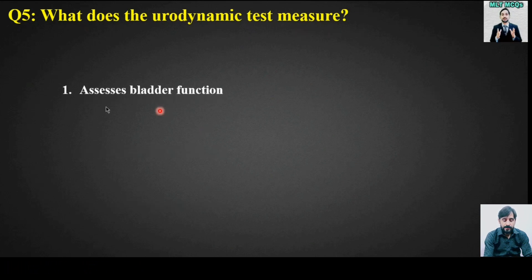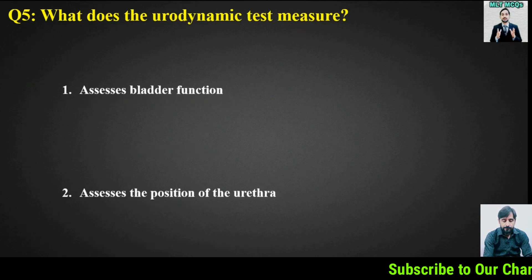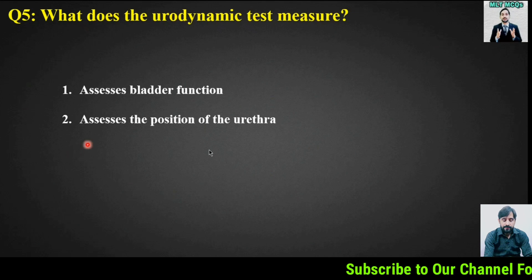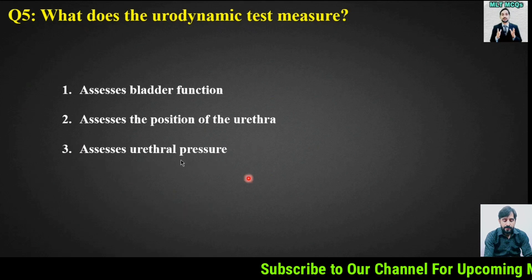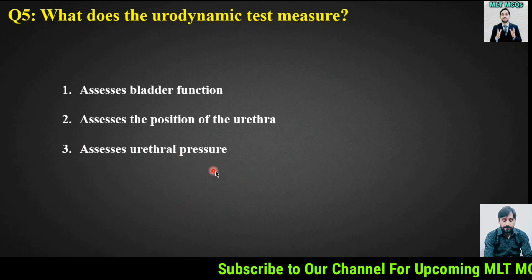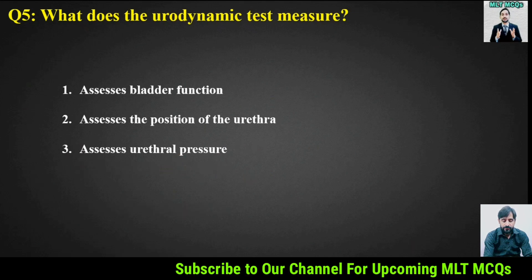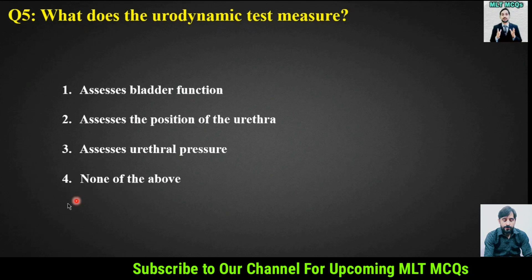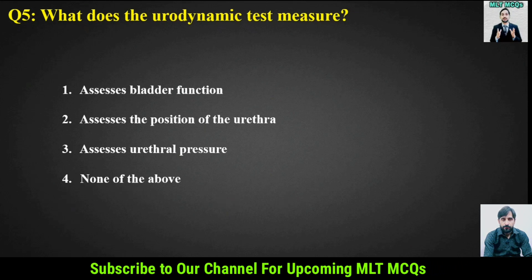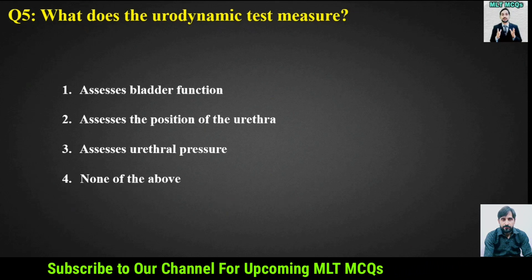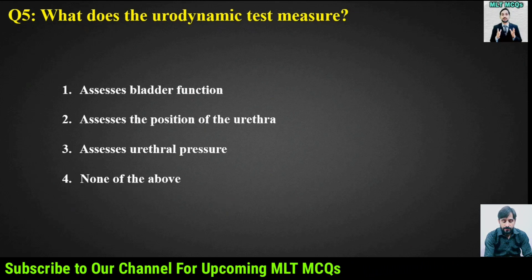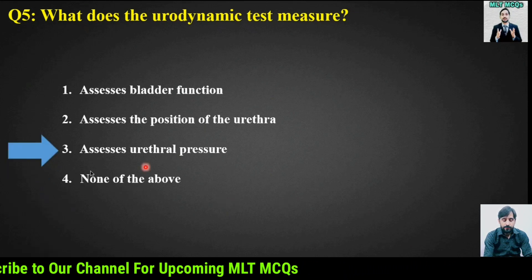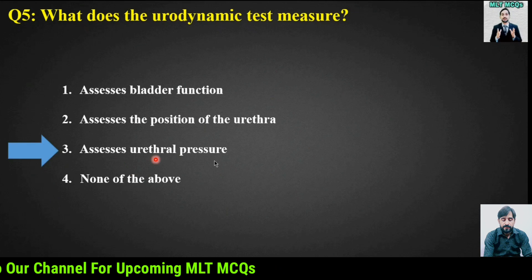MCQ number 5: What does the urodynamic test measure? Options are: assess bladder function; assesses the position of the urethra; or assesses urethral pressure; or none of the above. The right answer is option 3 — assesses urethral pressure.